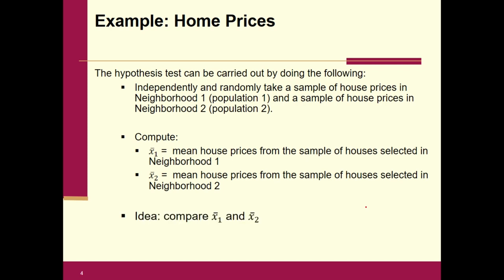We compare x-bar one and x-bar two by doing the subtraction between the two. This x-bar one minus x-bar two is a statistic and a wonderful starting point — it's going to be the point estimate for our confidence interval, and it's going to be the numerator of the test statistic when we do a hypothesis test.